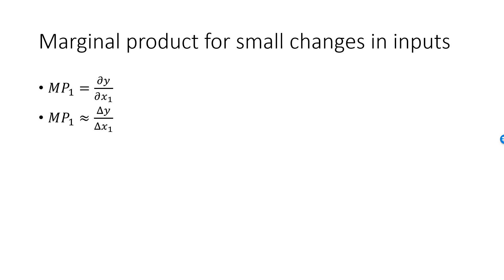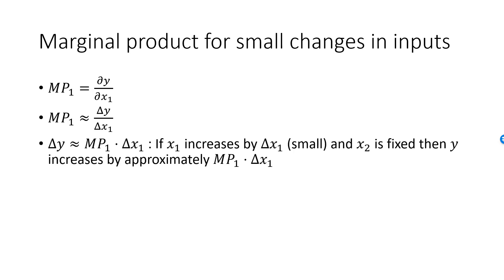If we multiply both sides by delta x1, we have delta y approximately equal to MP1 times delta x1. You can think of MP1 as an amplifier for the first production factor. If MP1 is 5, for example, and you increase x1, then y will increase by 5 times as much, as long as this increase is small. If delta x1 is equal to 1 and this is a small change, then delta y is approximately equal to MP1. Therefore, we tend to think of MP1 as telling us how much production will increase if we increase the first production factor by one unit. Similarly, MP2 is the increase in production when we increase x2 by one unit keeping x1 fixed.